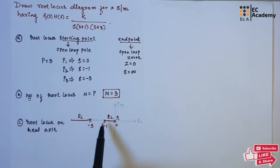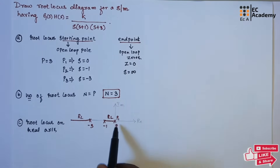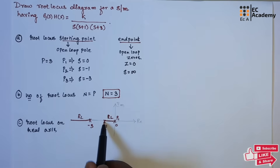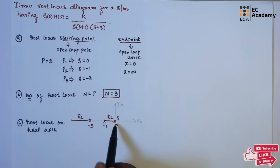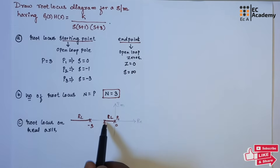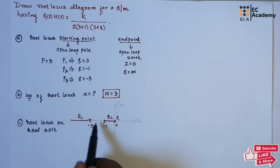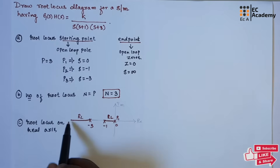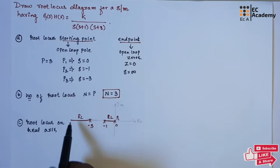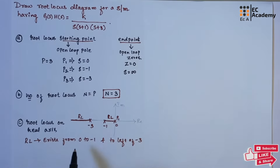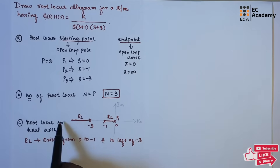To summarize, you need to count the number of poles and zeros to the right of a point. Between -1 and 0, one pole to the right gives an odd count, so root locus exists there. Between -3 and -1, two poles to the right gives an even count, so no root locus. From infinity to -3, three poles to the right gives an odd count, so root locus exists there. Therefore, root locus exists from 0 to -1 and to the left of -3.